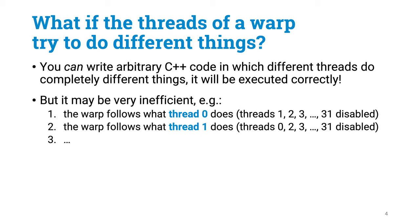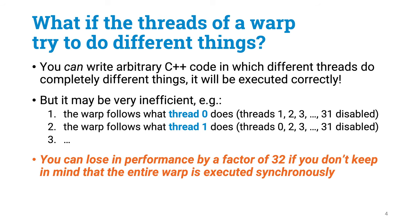But this will heavily influence the performance. If the 32 threads try to do 32 completely different things, then they will end up working in a sequential manner — one thread does its own part while others are disabled, and so on. So in general, programs in which all threads always do the same operations tend to be most efficient.